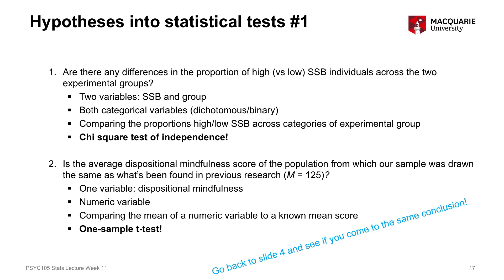What I think you should do now is go back to slide four and see if you can follow that same logical process to reach the same conclusions: the chi-square test of independence for question one and the one-sample t-test for question two.